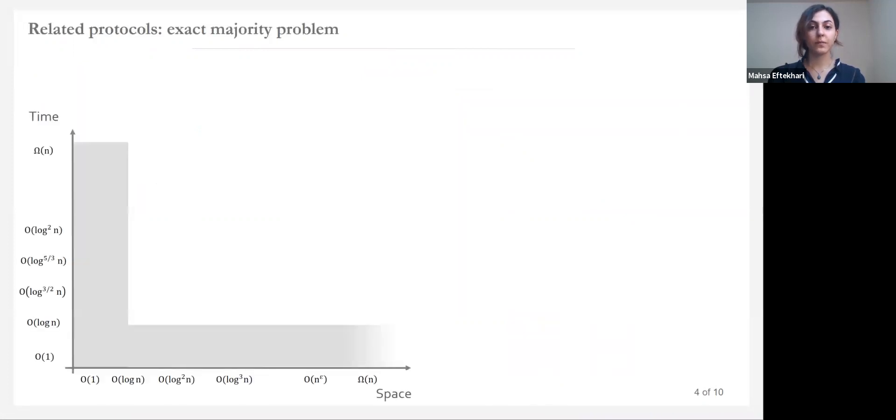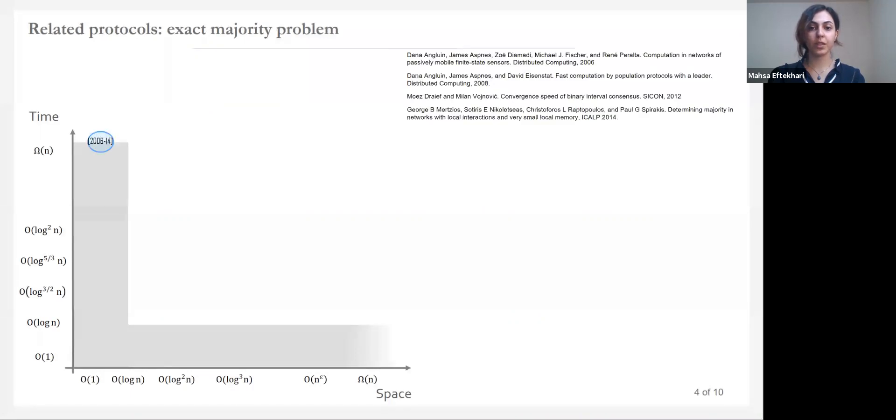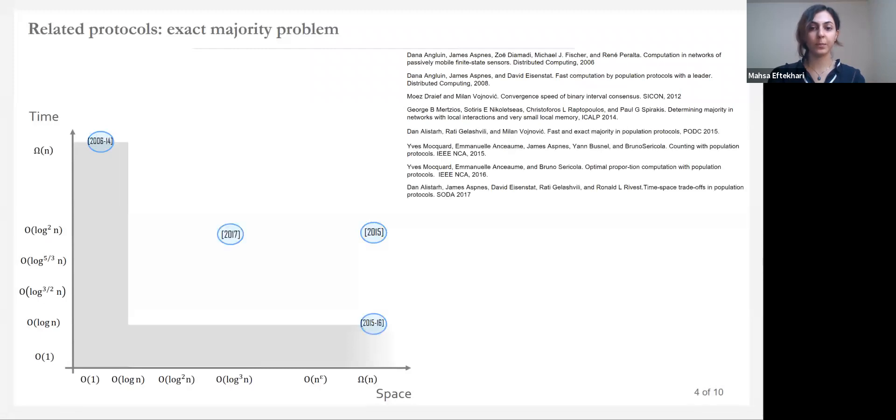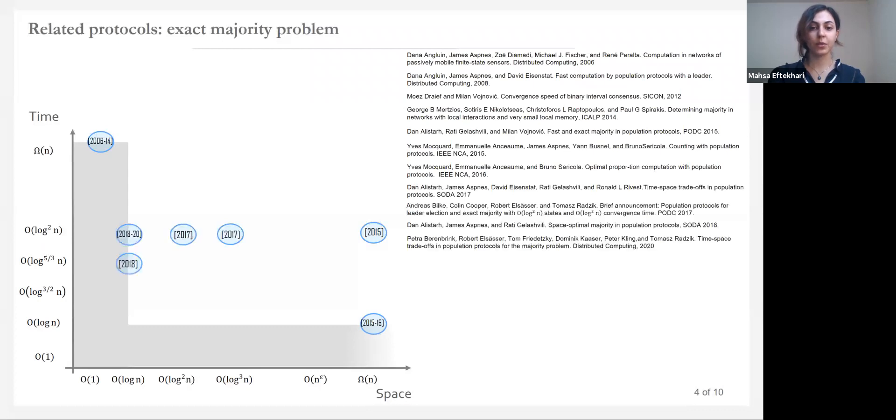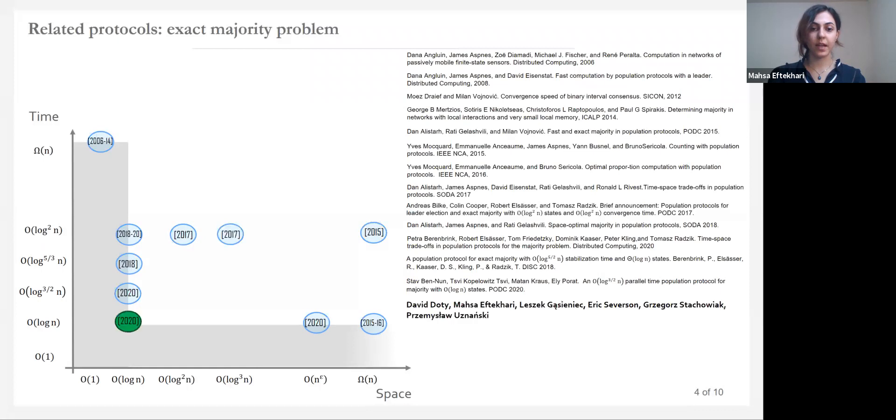Starting from 2004, many researchers have considered the majority problem in population protocols. The space and time complexity of the protocols have been improved over the time. It was a long existing open question if there exists a protocol that solves the exact majority problem in log n time while using log n states. Our protocol closes this gap. Note that in this chart, the gray area shows the impossible region.